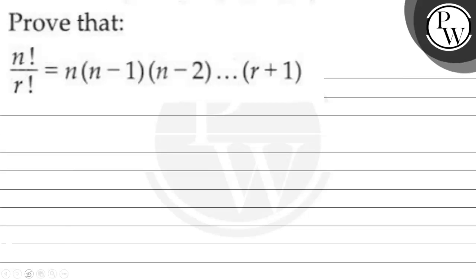Hello, let us read the question. So, the question says, prove that n factorial upon r factorial is equal to n multiplied by n minus 1 multiplied by n minus 2 so on up to r plus 1.